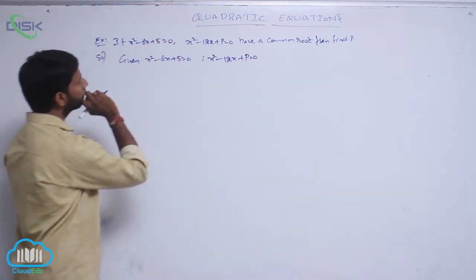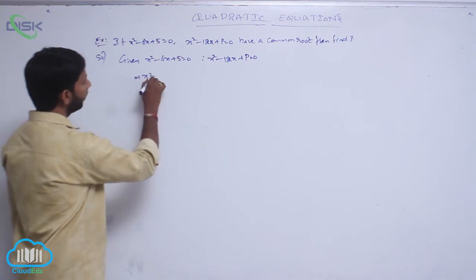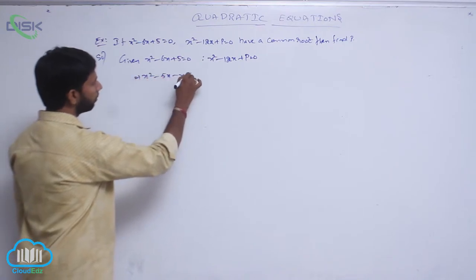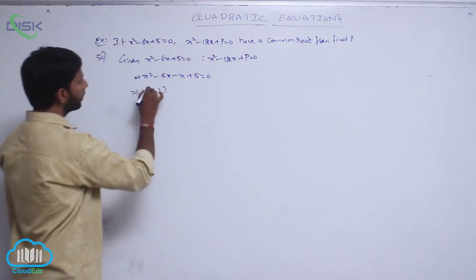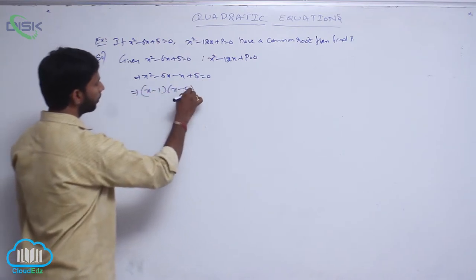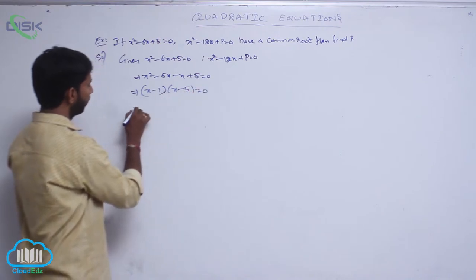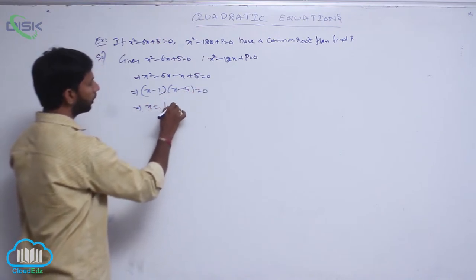So, the first equation has roots: x² - 6x + 5 = 0. The factors are (x - 1)(x - 5) = 0, which implies x = 1, 5.